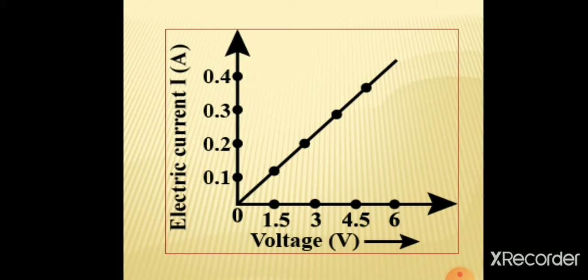If you are plotting a graph between electric current and voltage, according to Ohm's law, we can see that V will be always proportional to I and it will be a straight line having a constant slope.